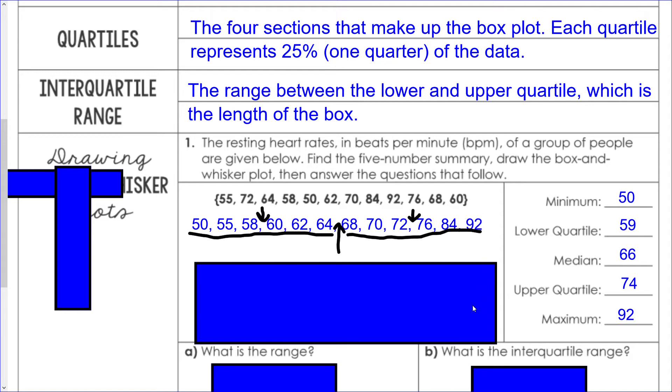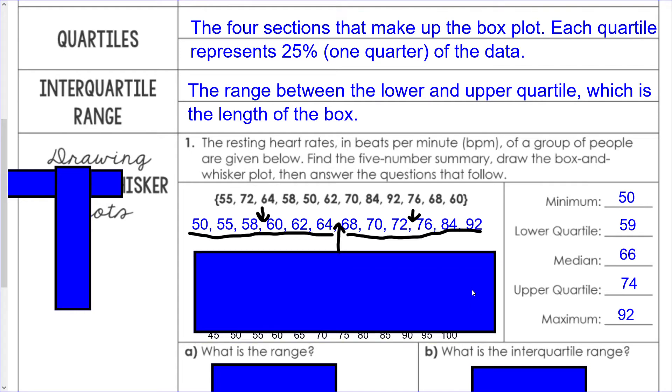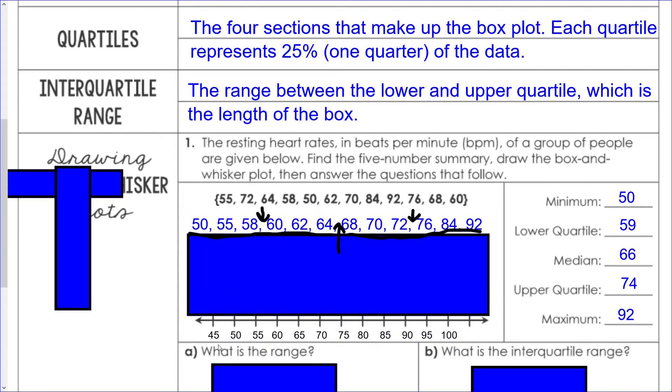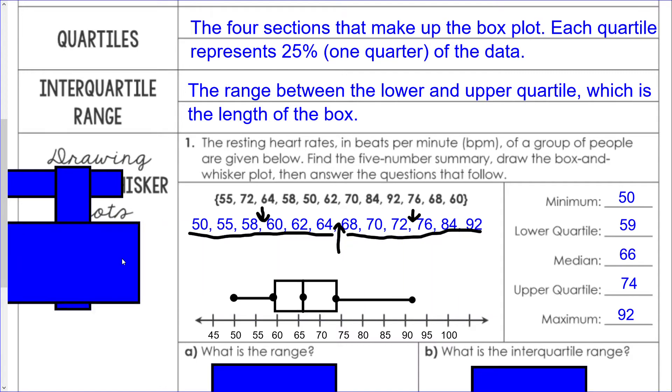When you're making a box and whisker plot, these five numbers you're going to want to make a dot for them on your number line. You do not have to start at zero unless that's where your data starts, but you do need to go up consistently. In this number line I've gone up by five every time, and you can see I've got dots for each of these five numbers.